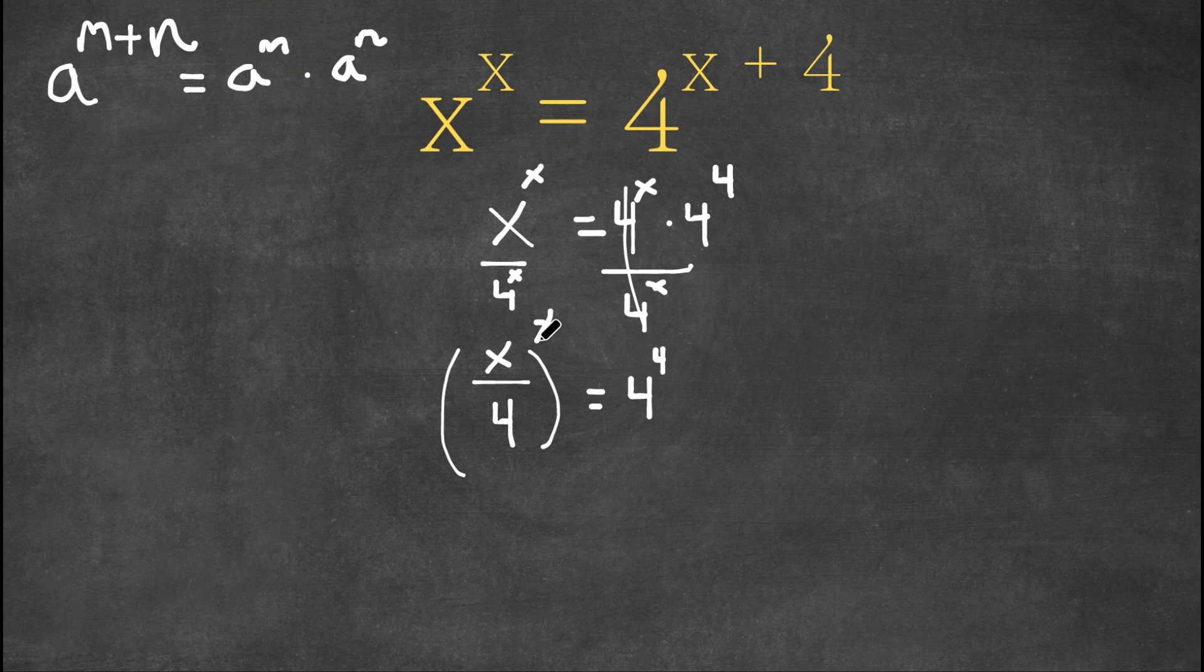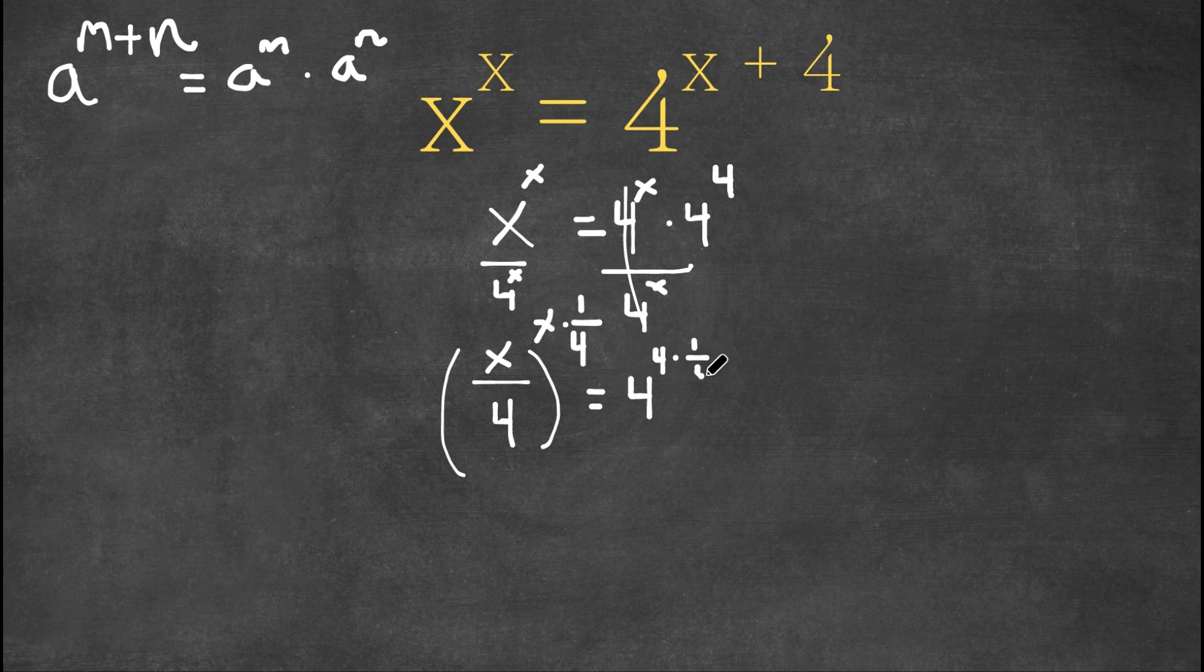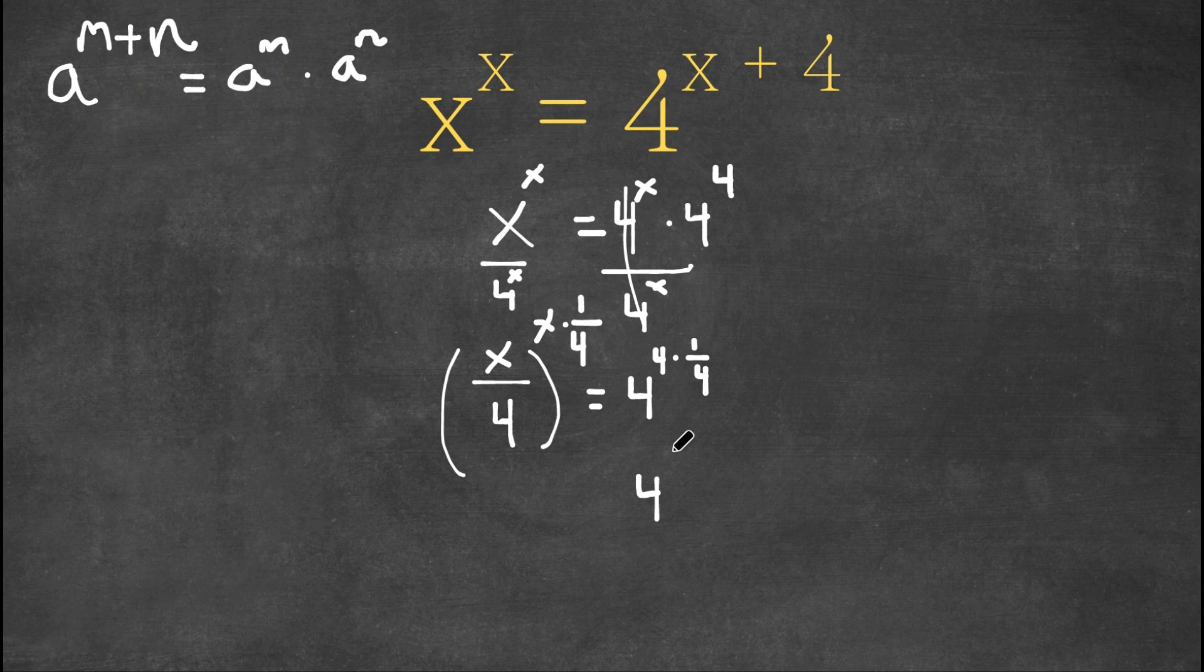Now what I'm going to do is I'm going to take the power of one-fourth on both sides. So if I take the power of one-fourth on both sides, I'm essentially multiplying all these powers by one-fourth. Now four times one-fourth is simply just one.